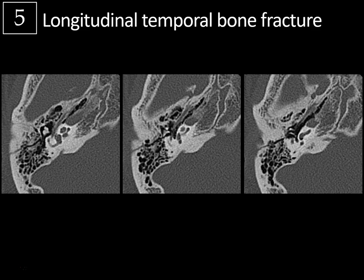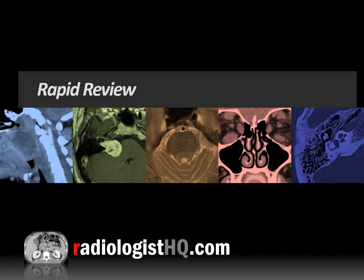A few other structures to evaluate: the facial nerve canal is here — this is the horizontal or tympanic segment — and you want to look for any facial nerve disruption with a temporal bone fracture. The carotid canal is right here, which is definitely an issue if the fracture extends into that region. Also note the otic capsule — the dense bone overlying the cochlea — and describe whether the fracture involves that capsule or not.